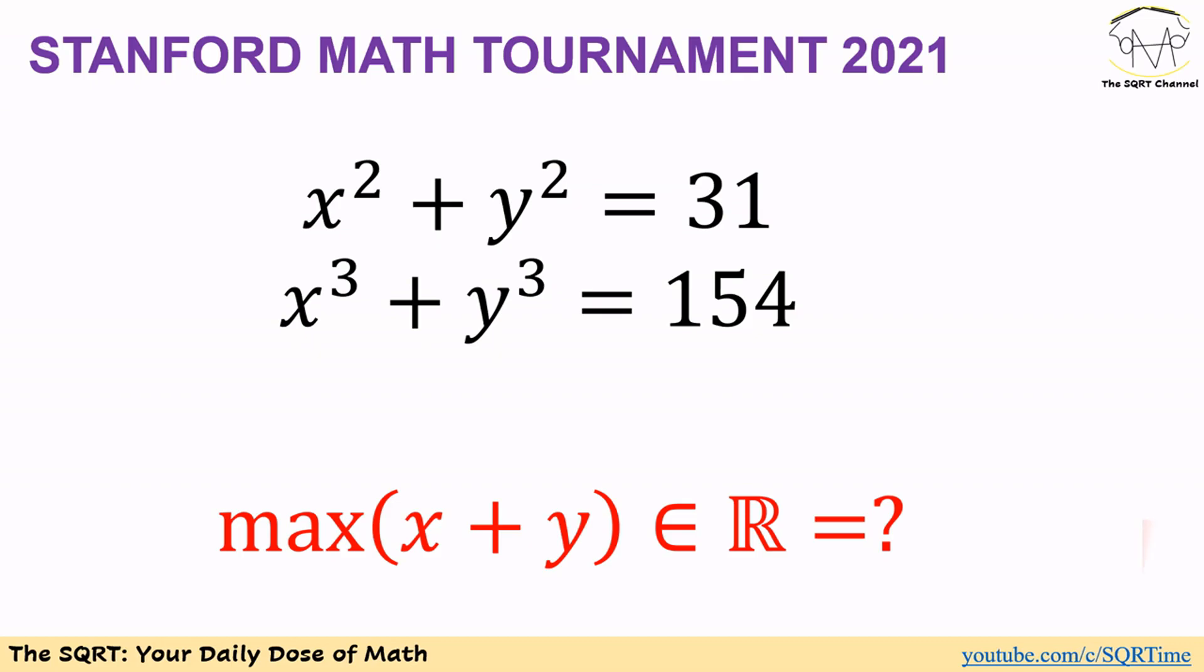Hello everyone, welcome to the SQRT channel. In this video we are going to talk about a problem from a Stanford math tournament from 2021. In this problem we have x squared plus y squared equals 31.